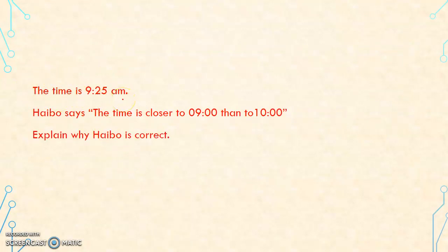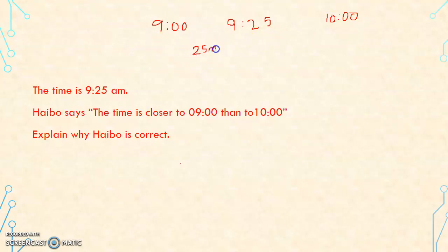The time is 9:25 a.m. Hybo says the time is closer to 9 than to 10. Explain why Hybo is correct. So 9:25, she said 9:25 is closer to 9 than to 10 o'clock. So what we have to do is find the difference between 9:25 and 9, and 9:25 and 10. So 9 a.m. to 9:25 a.m., that is the difference of 25 minutes. 9:25 a.m. to 10 o'clock - 9:25 to 9:30 is 5 minutes, then another 30 minutes. So a total of 35 minutes.